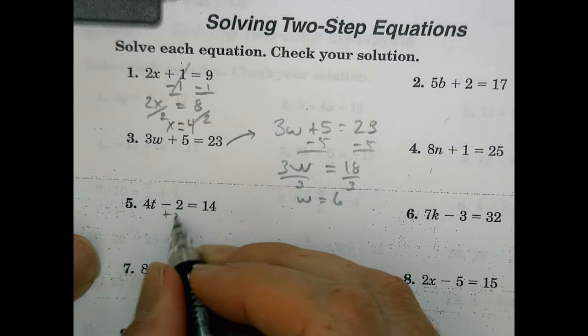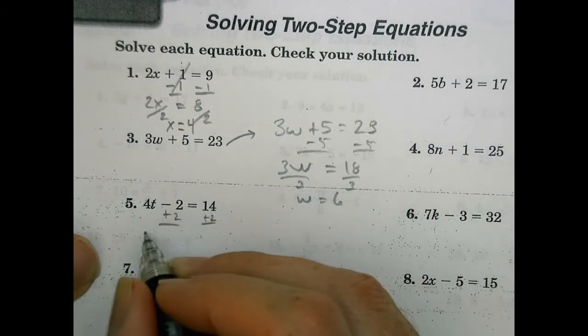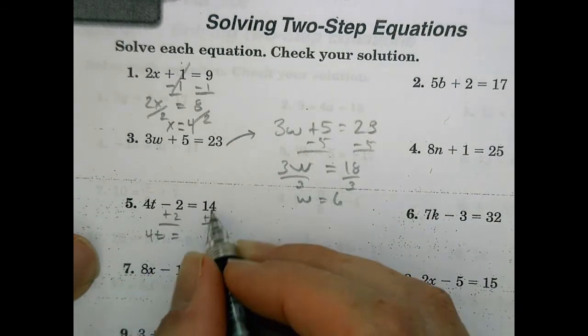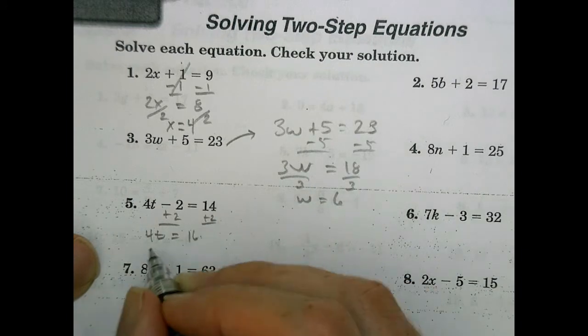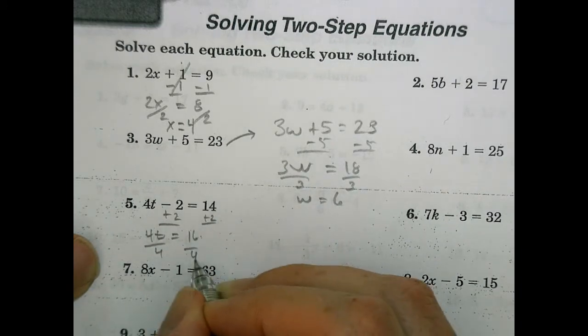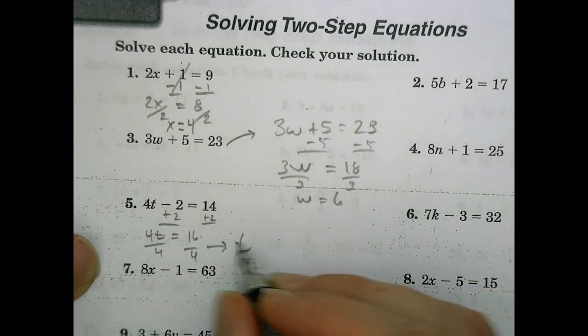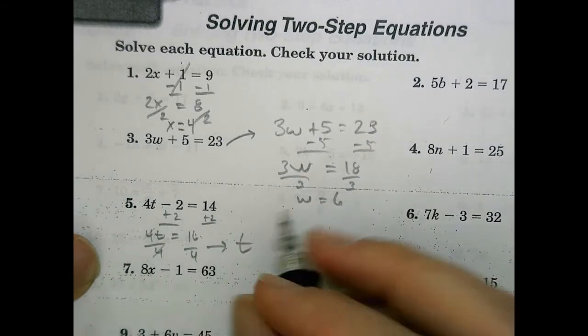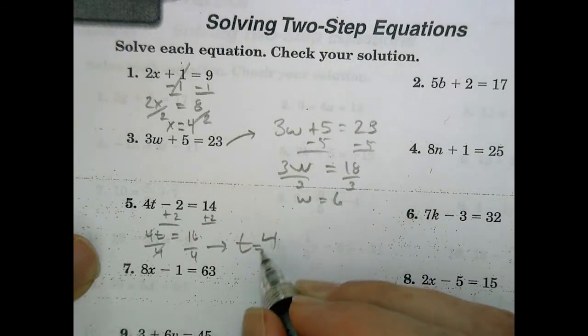Number 5. We're going to add 2, add 2. So 4t equals 14 plus 2, which is 16. Divide by 4, divide by 4. So that t, reduce, reduce, equals 16 divided by 4, which is 4.